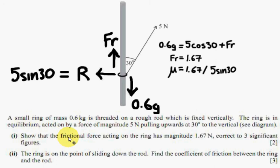And you've got this string pulling this ring up, so the vertical component of the force, the pulling force of the string, is 5 cos 30.